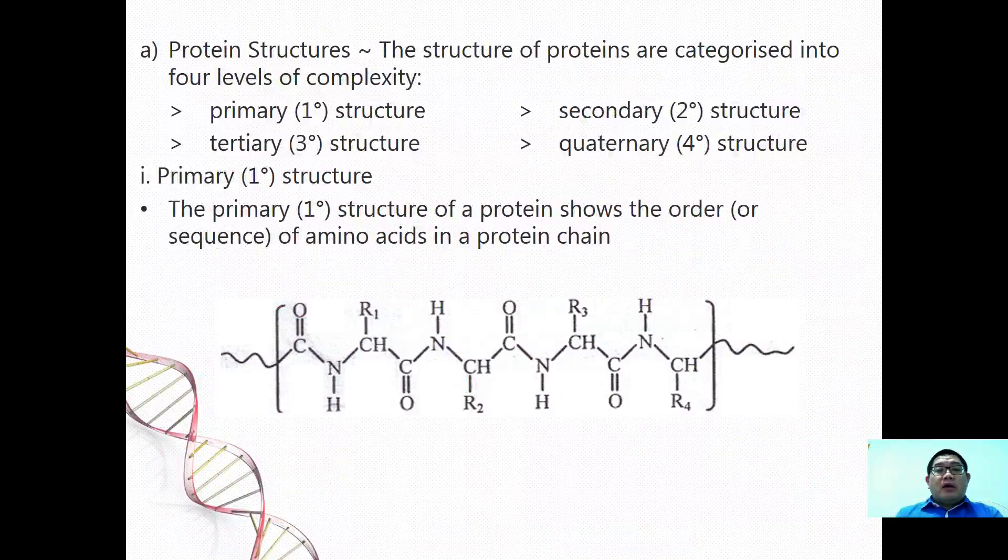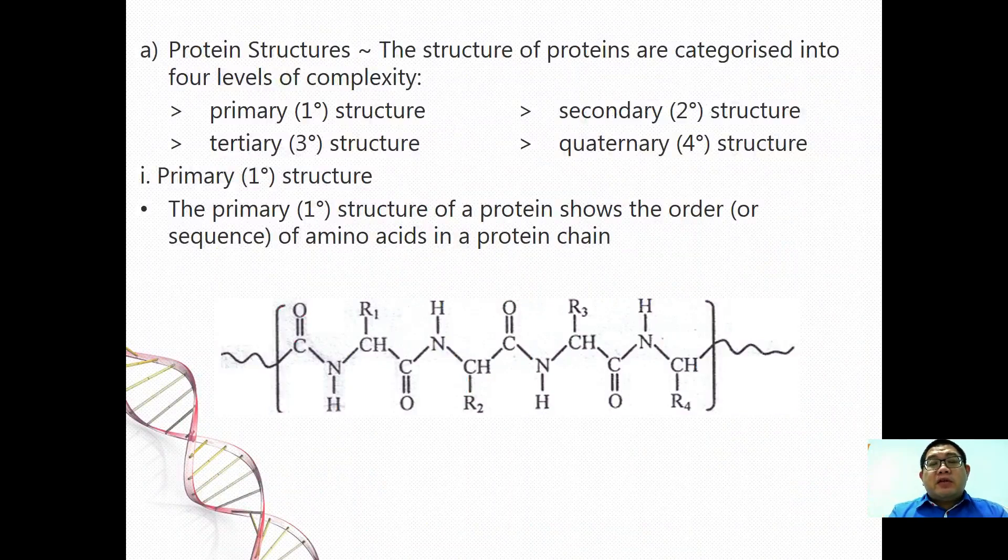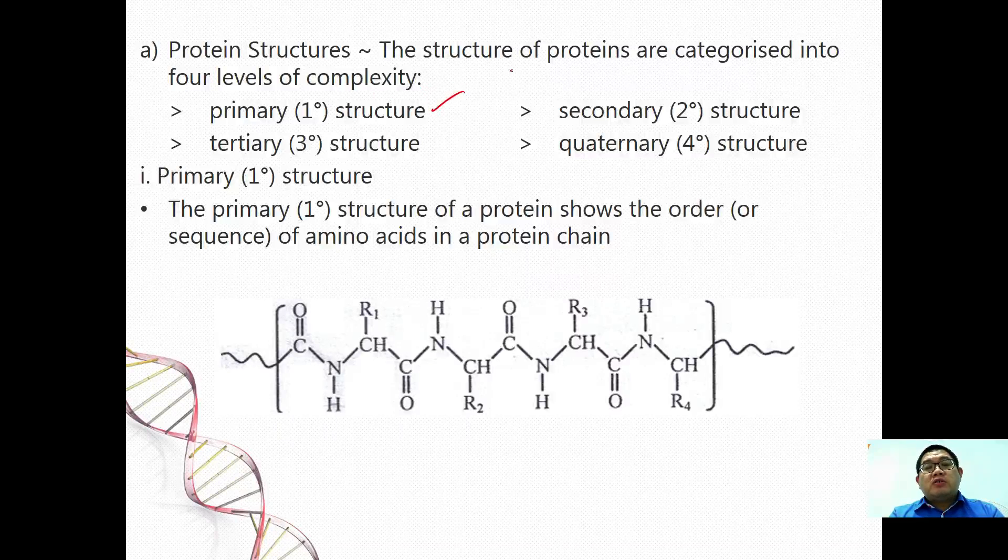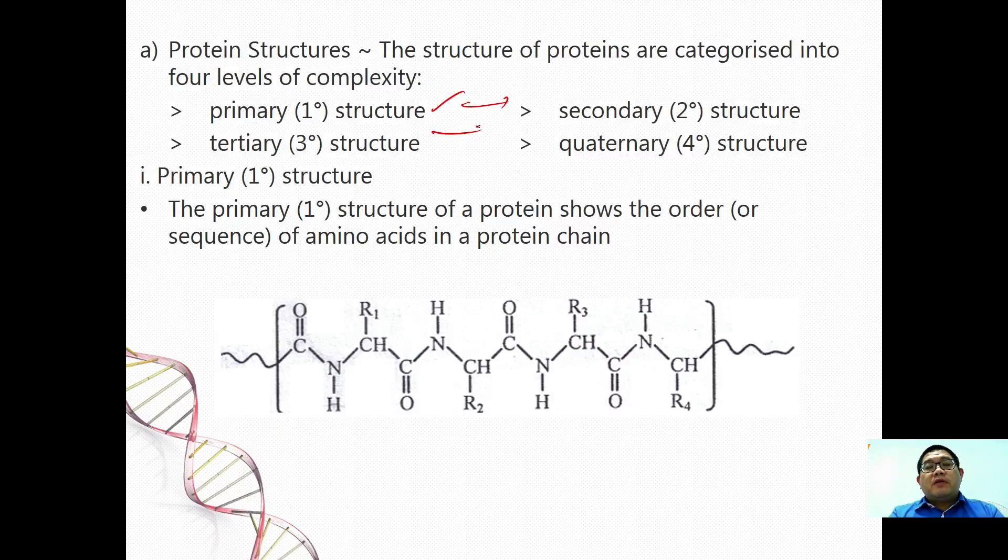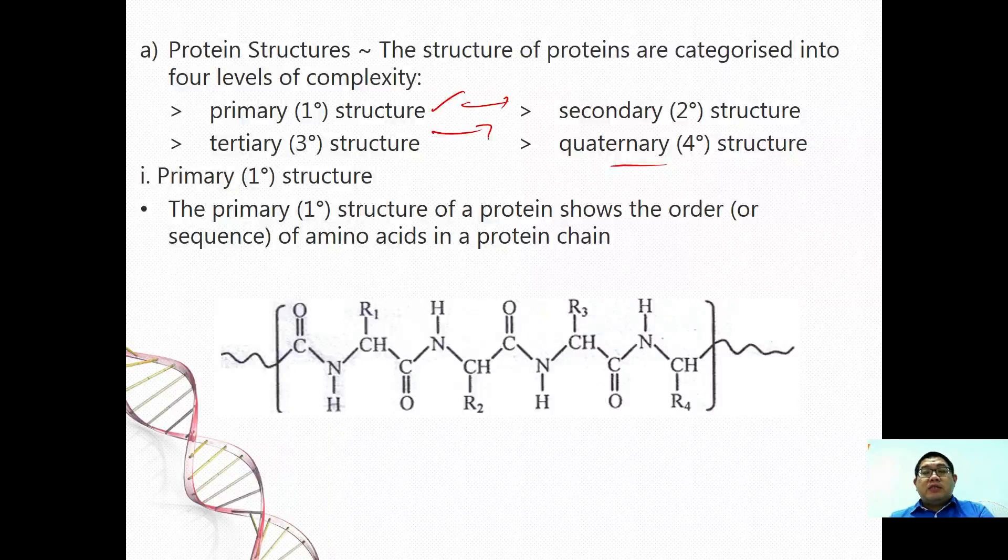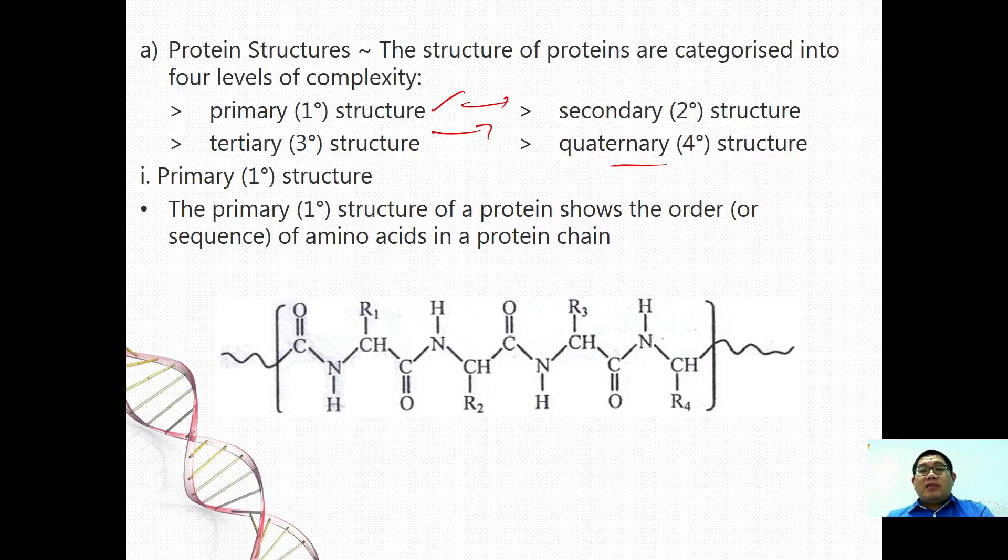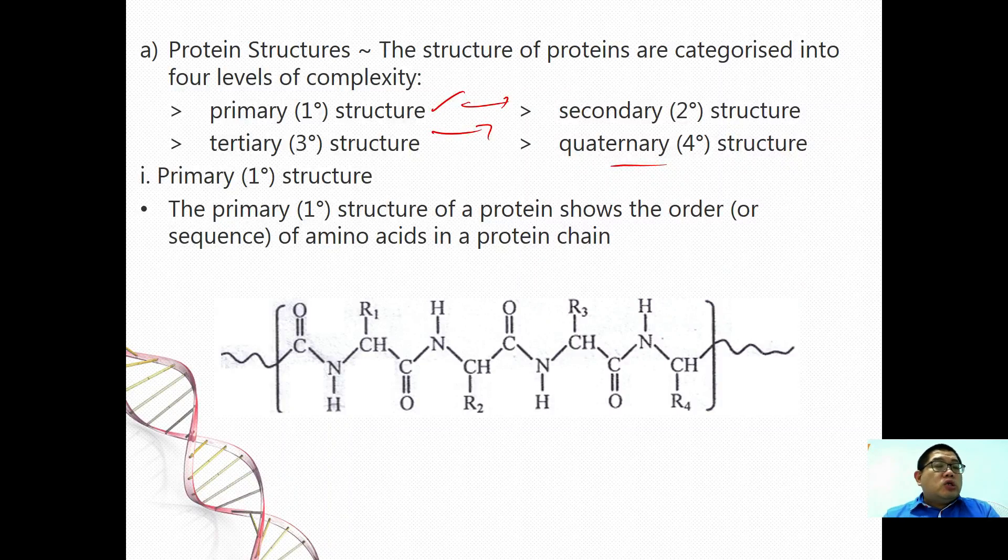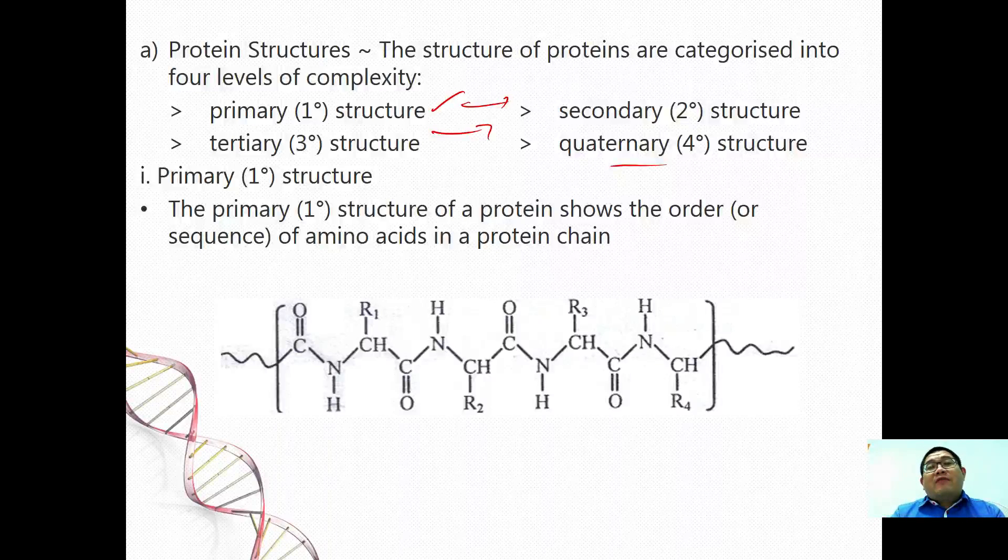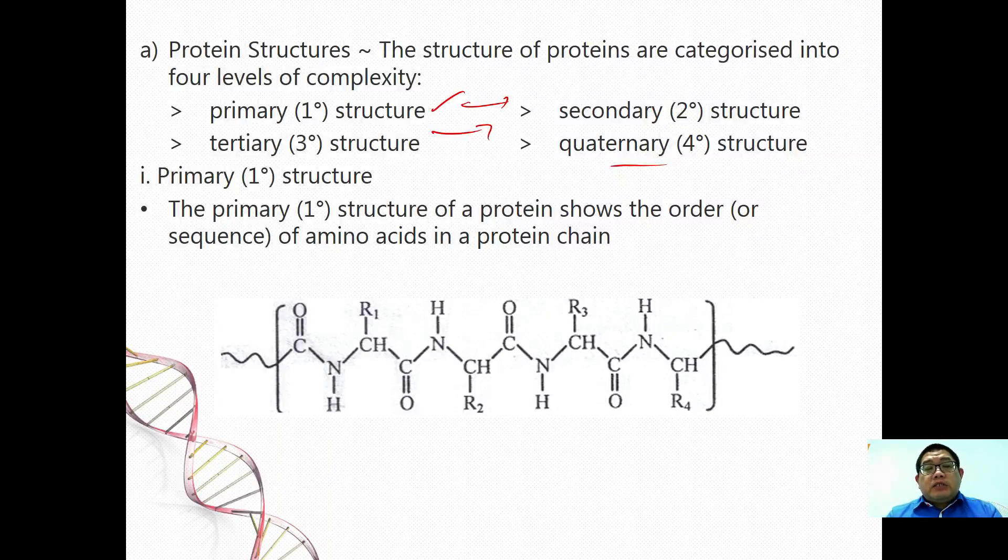Protein structure can be generally categorized in the four levels of complexity, starting from the least complex, which is primary structure, to a more complete quaternary structure. Primary structure of a protein is showing the order of amino acid in the protein chain. This is the one chain of the primary structure. This is what we learn now for STPM.